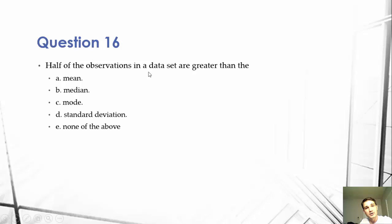Half of the observations in a data set are greater than the A, mean, B, median, C, mode, D, standard deviation, or E, none of the above.